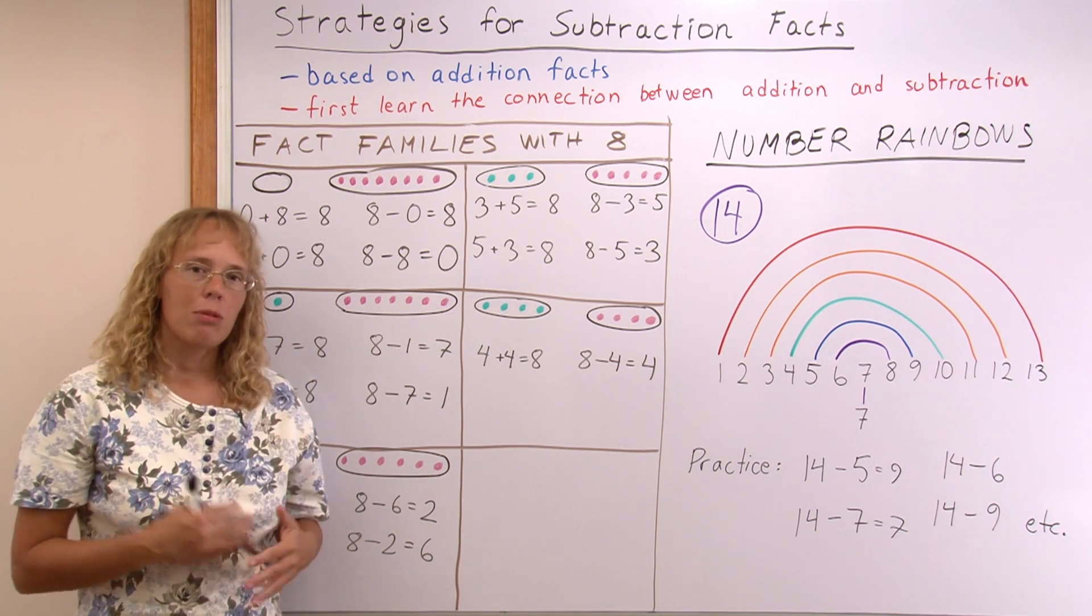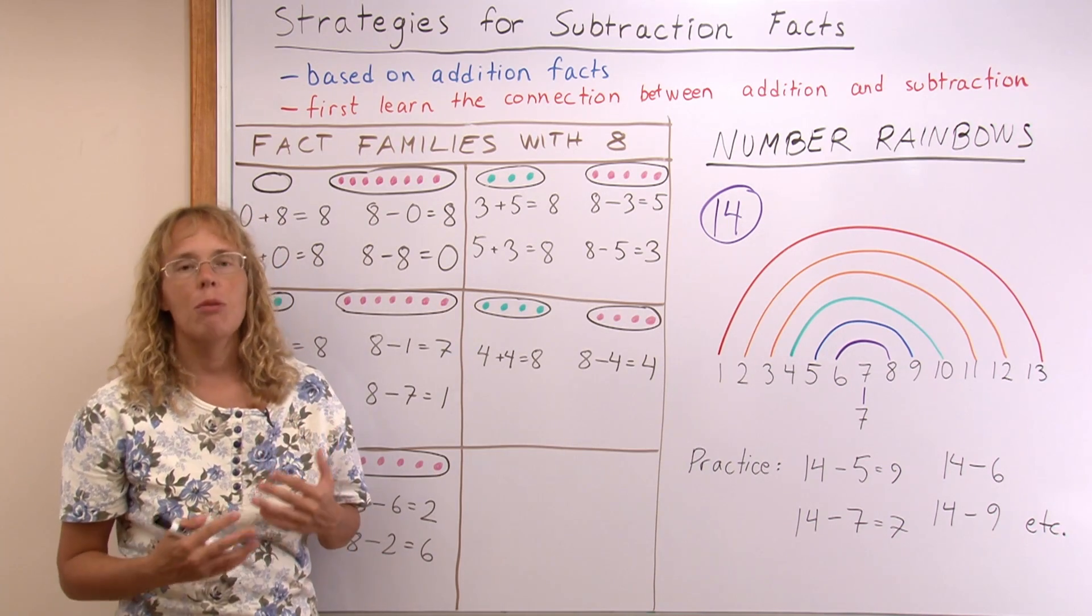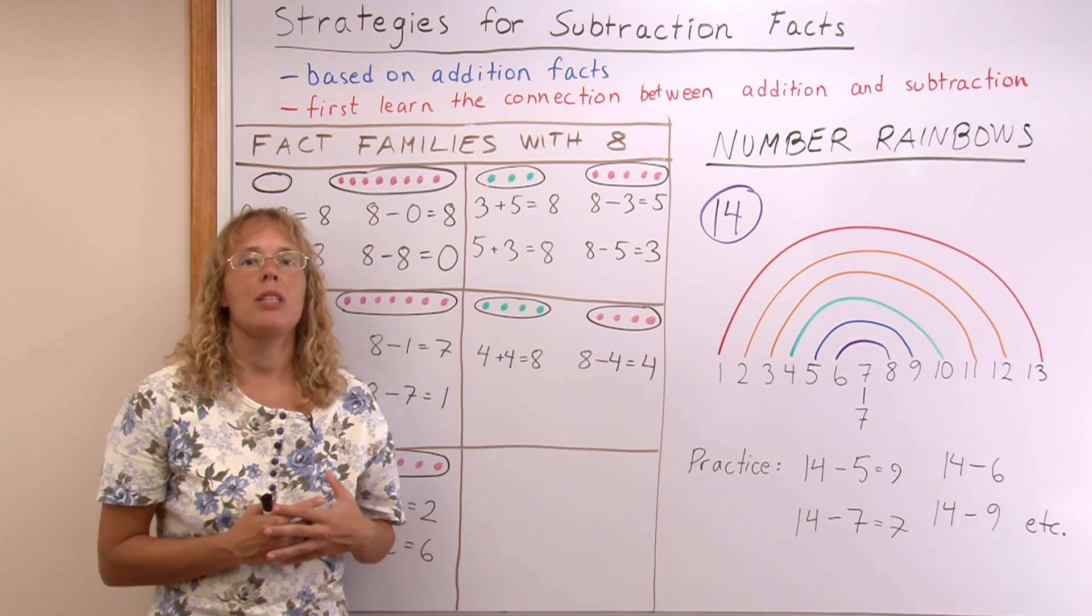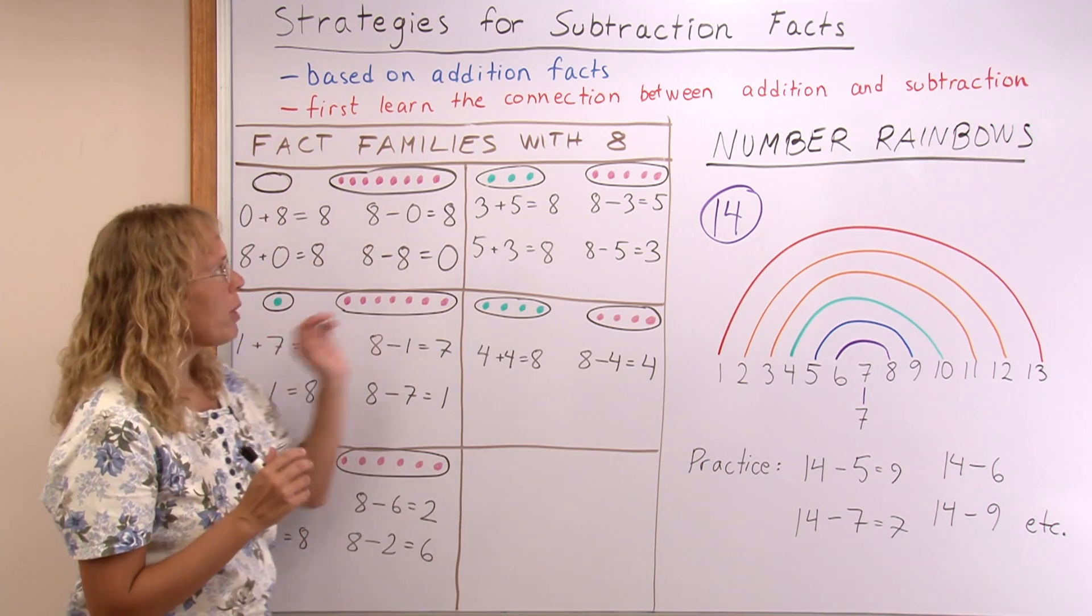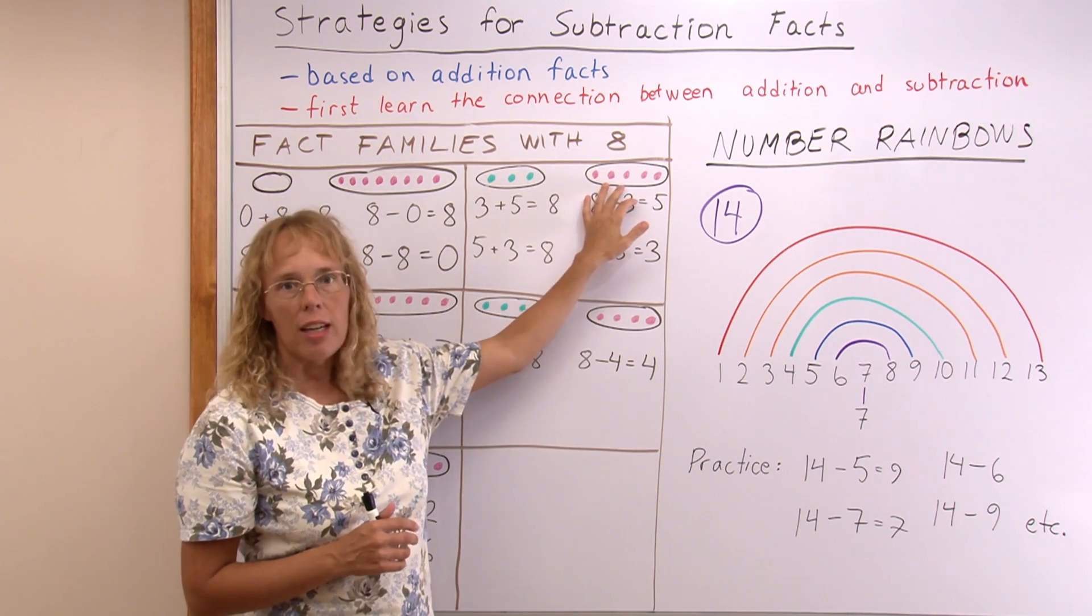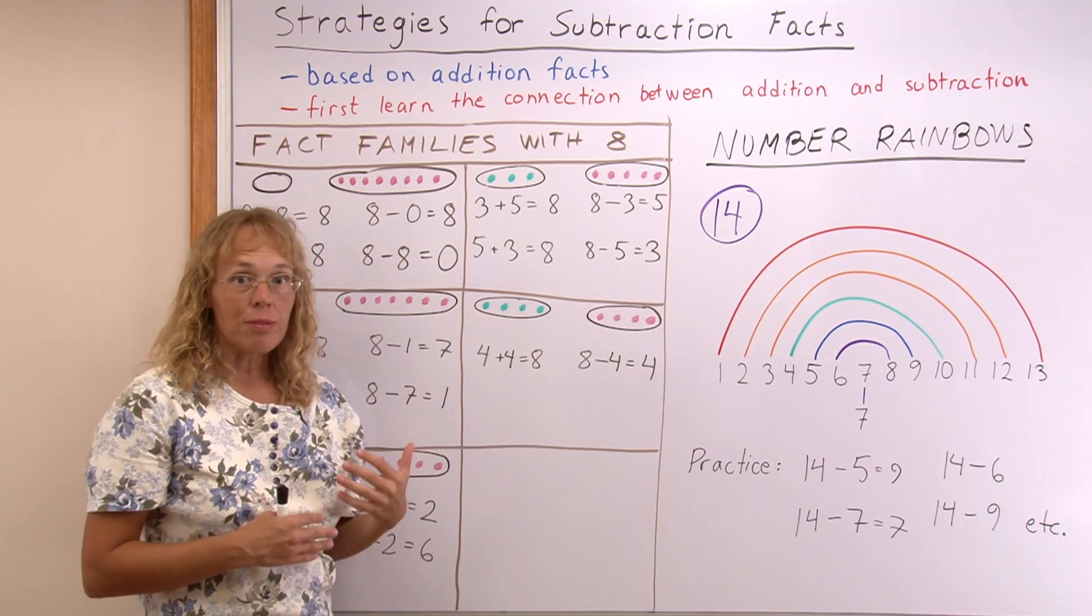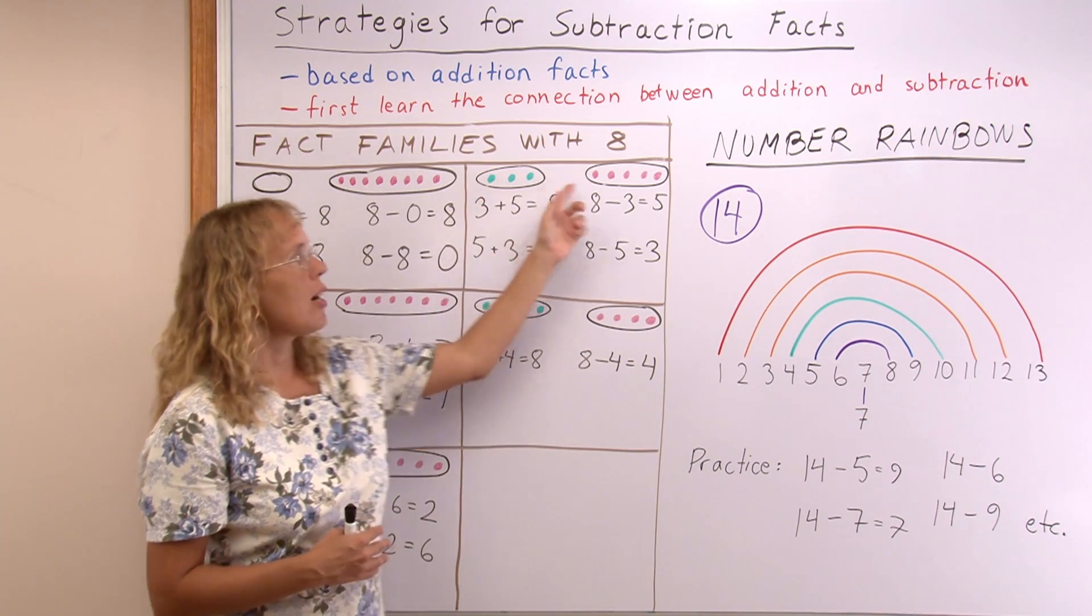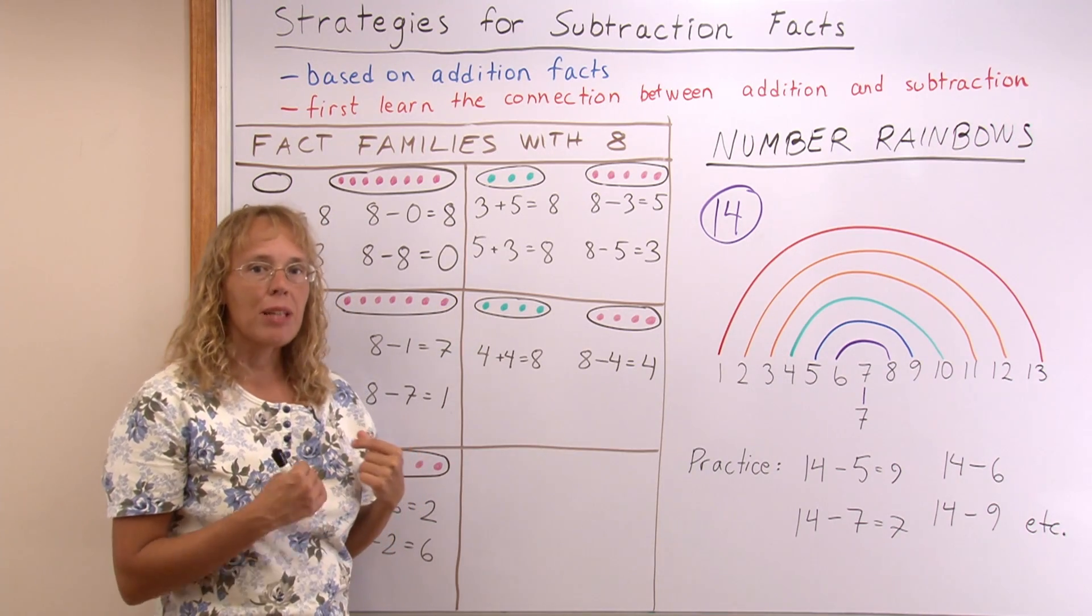So to start with, the child needs to learn what subtraction means—it means taking away—and then needs to learn the connection between addition and subtraction. To teach that part you can just draw a picture of some objects in two groups, like here 3 and 5. And then the child has to make an addition from it, like 3 plus 5 equals 8. And then also learn to write subtractions from that same picture.